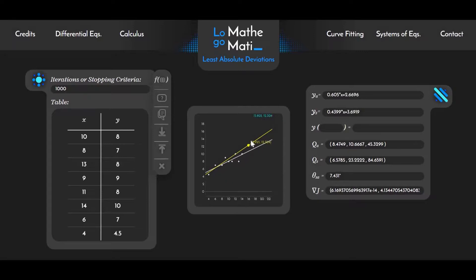What we see here is two lines. The yellow line is going to be our least absolute deviations line and the white line is going to be the least squares line. They have an angle of 7.431 degrees included between them. We can tell that the LAD approach has converged because by looking at the cost function's derivative, we can observe that it's almost zero.